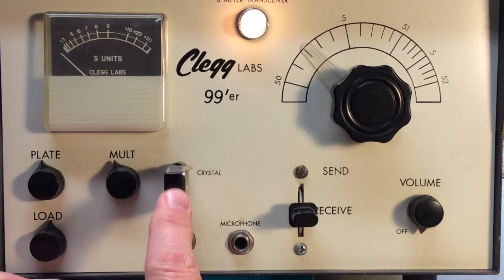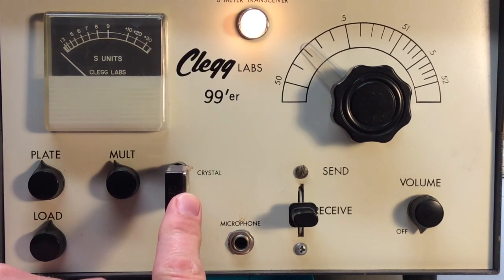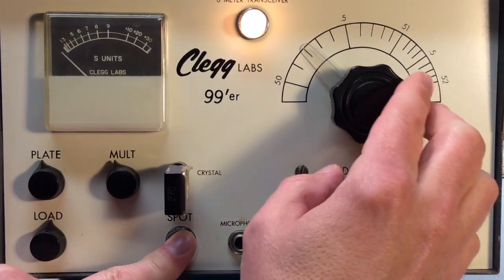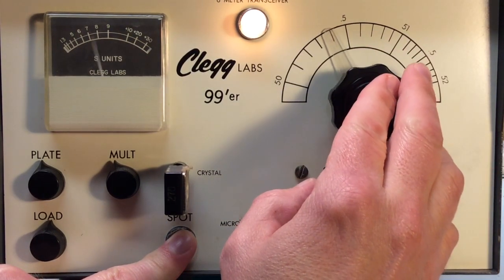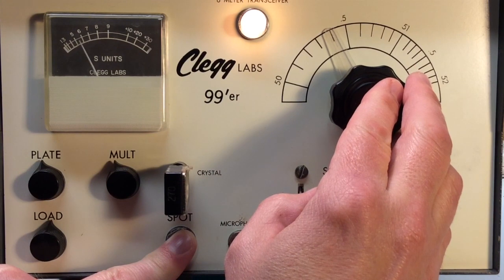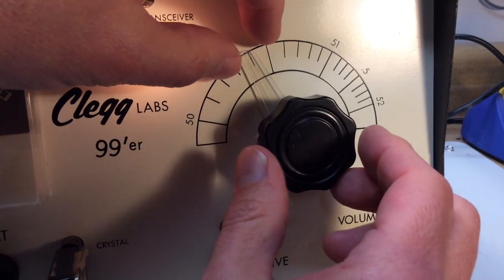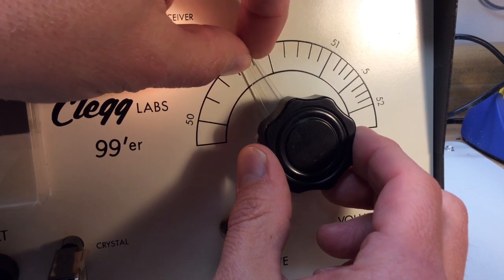And you'll notice the spot control here. What that does is allow you to listen in for your transmit frequency, your crystal, on the receiver dial. And that way you'll know where to line it up while listening for other stations when you're transmitting. And if the dial is off a little bit, you can manually calibrate it.